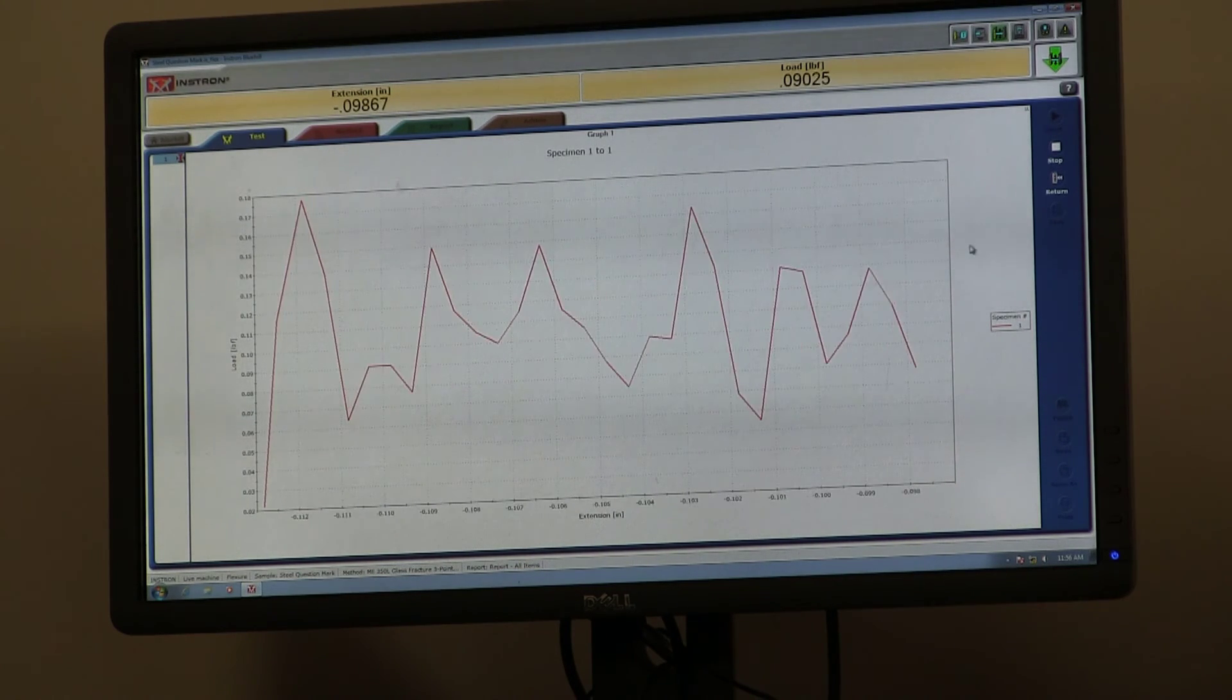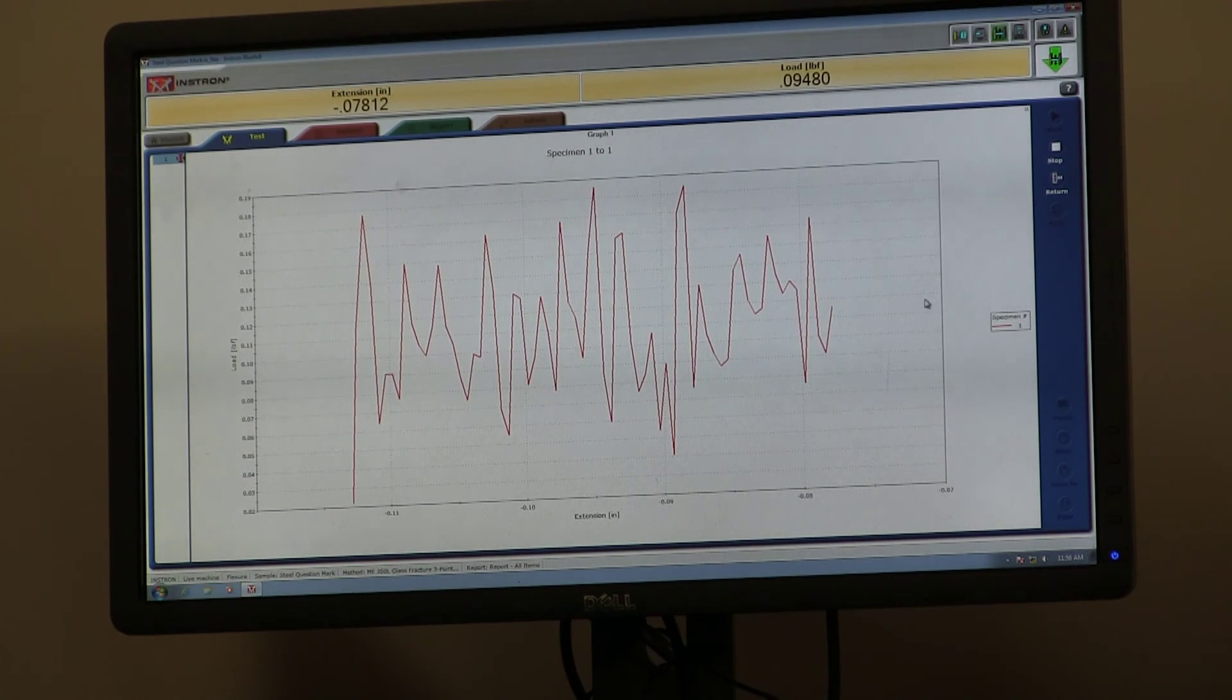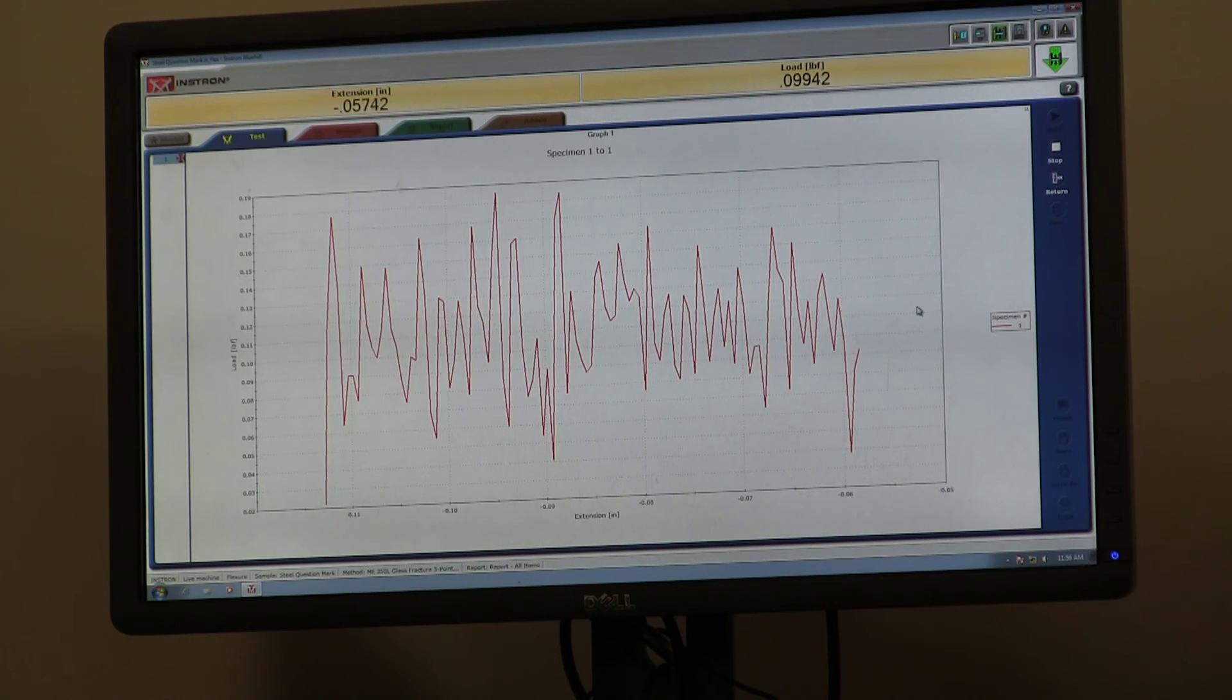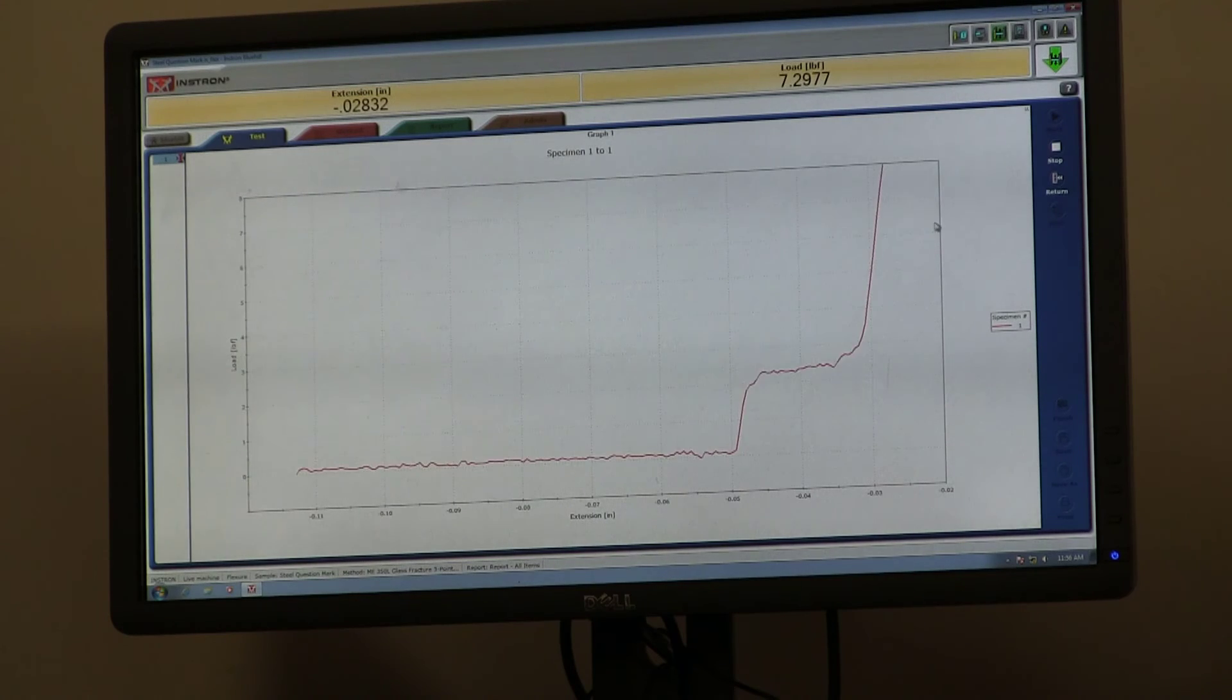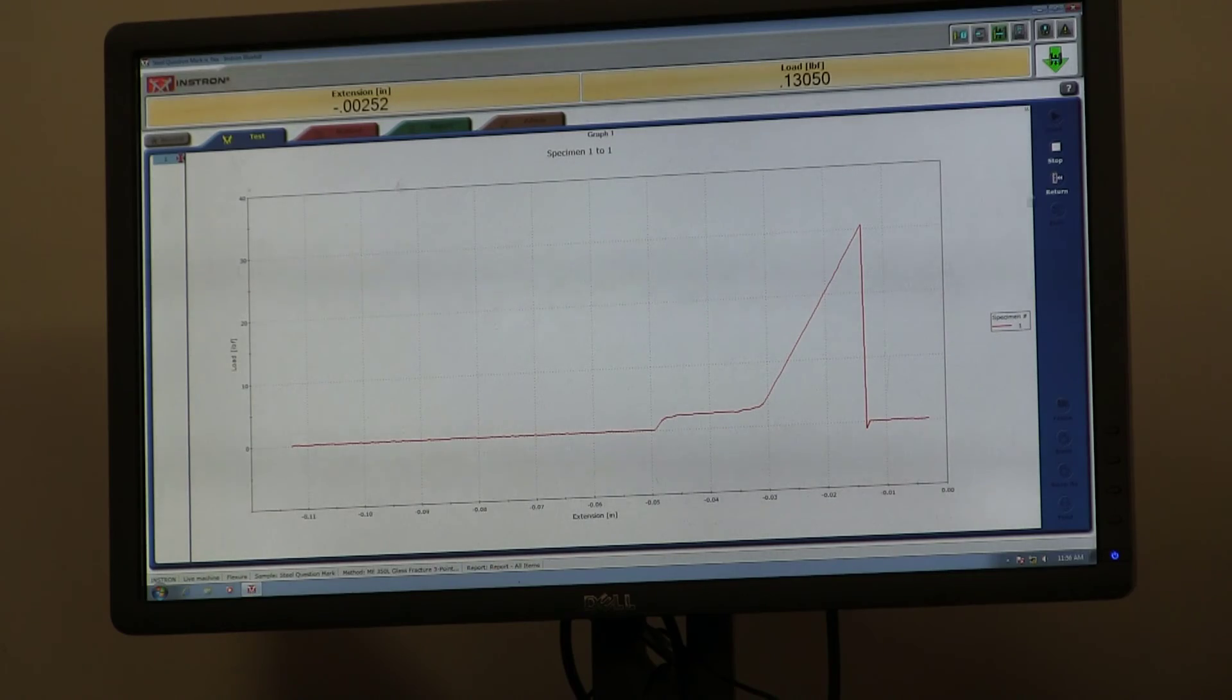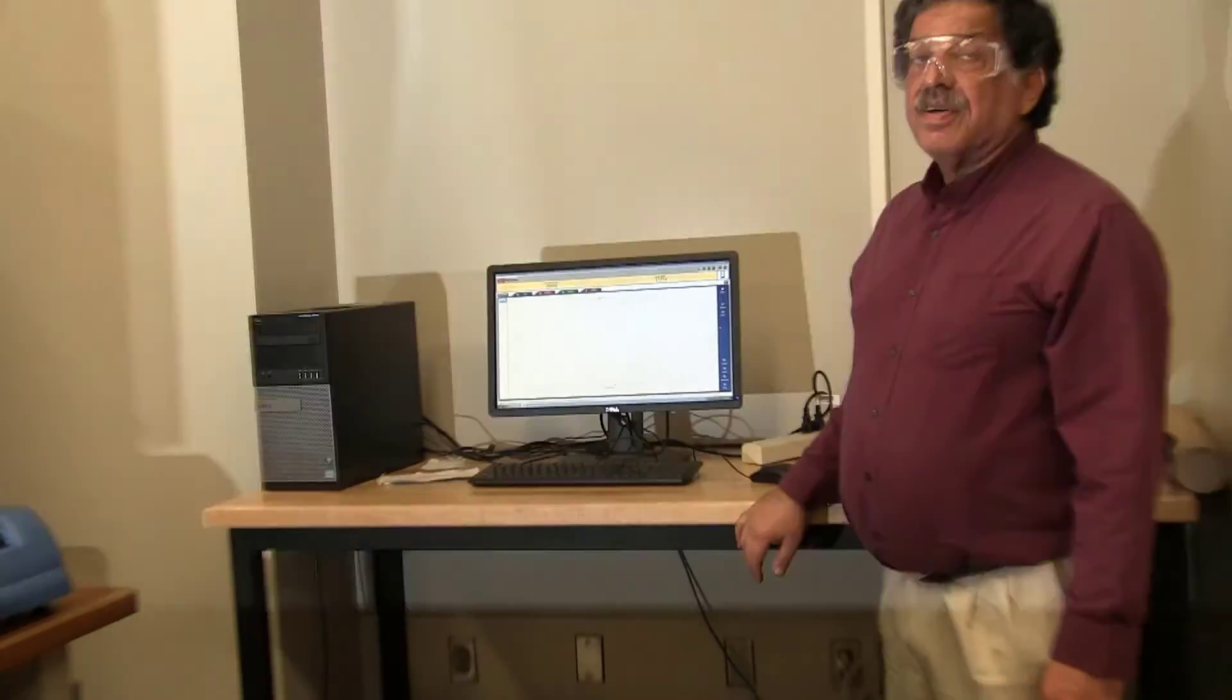So this is the wiggles. So this is the wiggles because we really don't have any significant load. This is just electronic noise. Okay, so now we went up to about two pounds, and now we're going up linearly until the fracture load. And this one fractured at about 29 pounds or so. I'm going to stop the experiment, remove the specimens, and clean it up for you.